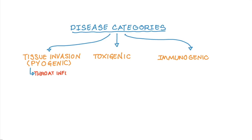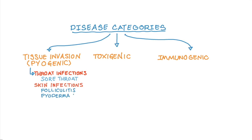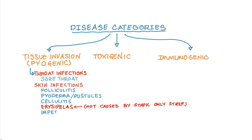Pyogenic infections are divided into two types: infections of the throat or pharynx — that is, sore throat or pharyngitis caused by Streptococcus pyogenes — and skin infections. Skin infections range anywhere from folliculitis, which is infection of a follicle, to cellulitis. One infection particularly specific to Streptococcus pyogenes is erysipelas, which we'll discuss shortly.